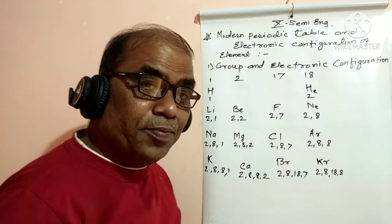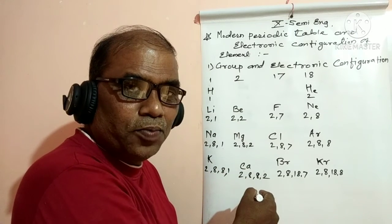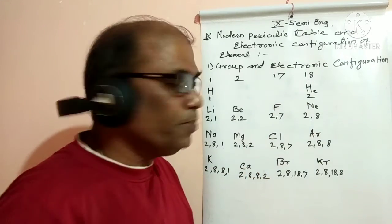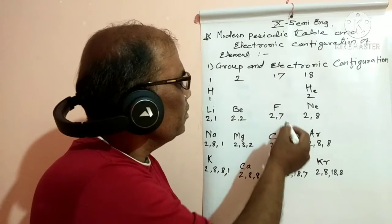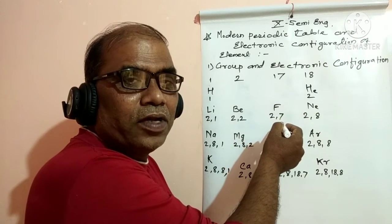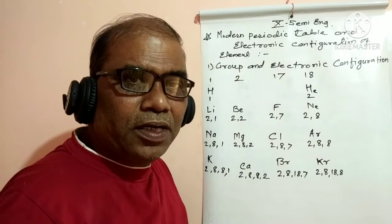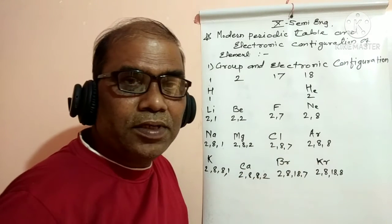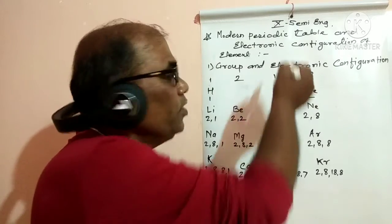The second group elements are alkaline earth metals, and the 17th group elements are halogens. For example, chlorine has the electronic configuration 2, 8, 7 — with 7 valence electrons, placing it in group 17. The 18th group elements have a complete outer shell with 8 electrons.